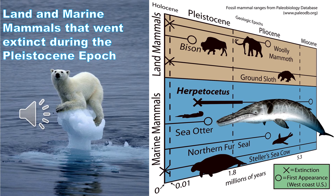Land mammals that went extinct during the Pleistocene epoch were woolly mammoths, bisons, and ground sloths. Marine mammals that went extinct during the Pleistocene epoch were herpidocidas, sea otters, northern fur seals, and Steller's sea cows. Some of these mammals could have gone extinct either due to the actual climate effects or human hunting.